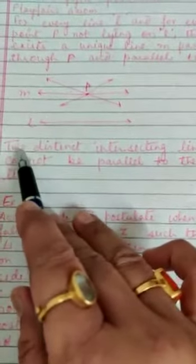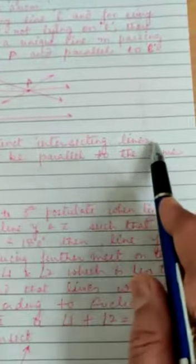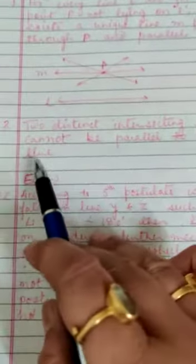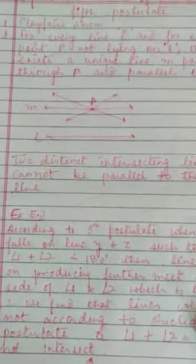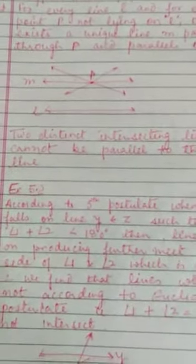The statement is: two distinct intersecting lines cannot be parallel to the same line. I hope you have learned these postulates also. Now coming to exercise 5.2.